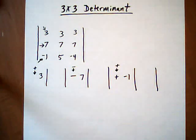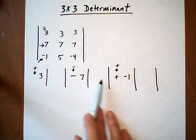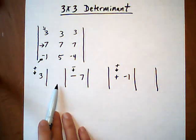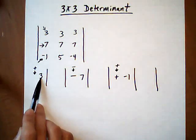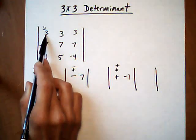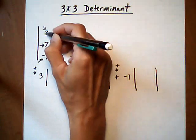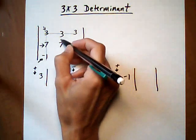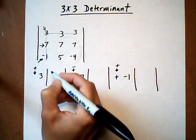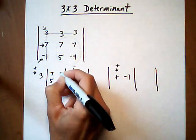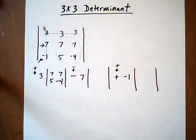Alright, so now to see what pieces we have to put into these leftover 2 by 2 determinants, what we're going to do is cross out the row and the column of each starting number. So here's the 3. Let's cross out the row and the column with the 3, and then you'll see right here is our leftover determinant. So let's put that in: 7, 7, 5, take away 4, or minus 4.